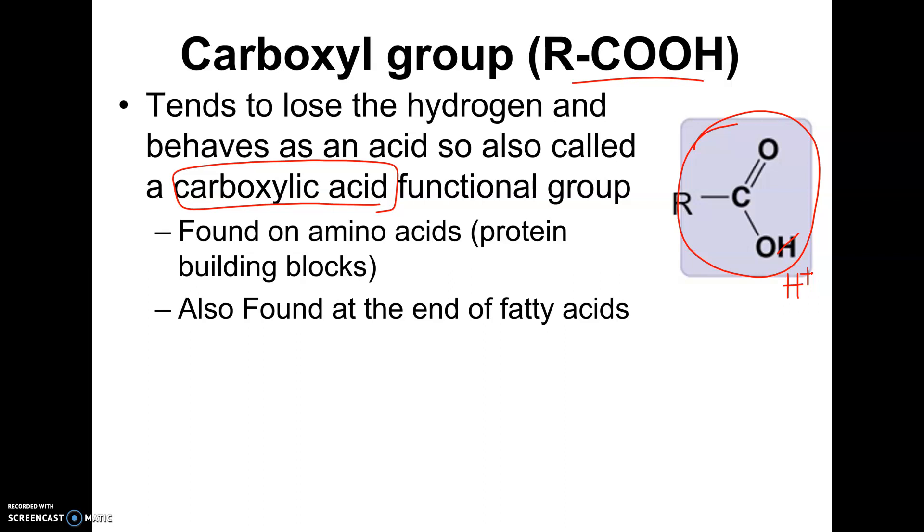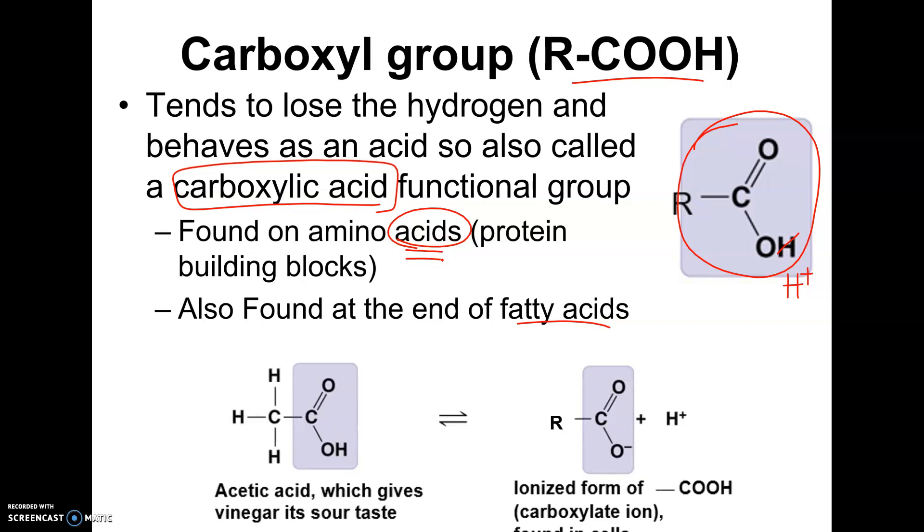Now, we find these on amino acids, which are the building blocks of protein, and we also find them on fatty acids, which are the building blocks of fat. In fact, that's why amino acids are called amino acids, because of this acidic group. And this, you don't need to know, but this is just to show you what I'm talking about, of how it behaves as an acid. So it's showing how this hydrogen tends to break off, and that's what gives vinegar its sour, tart taste, is acetic acid dissolved in water, basically, and that's what's making vinegar.